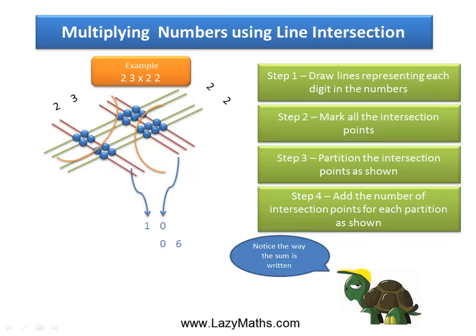The 1 is in the carryover place because it is in the tens place value, and hence we are writing the digits in this particular format. The last group has 4 intersection points, so we write 04.